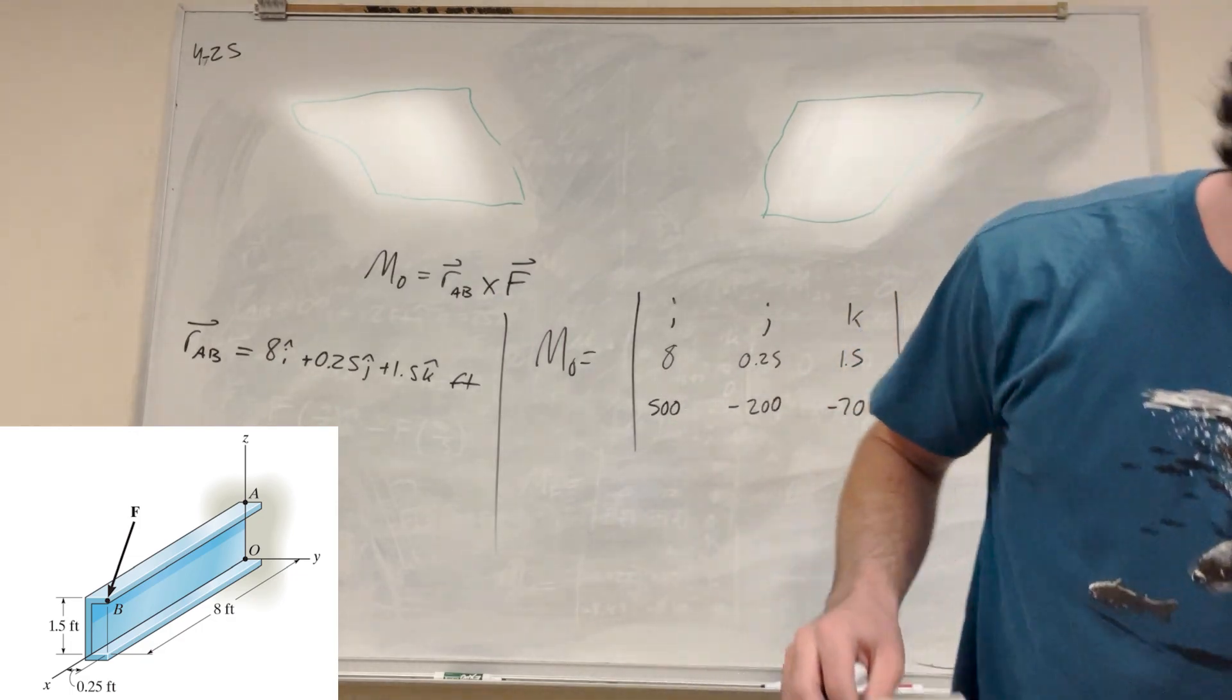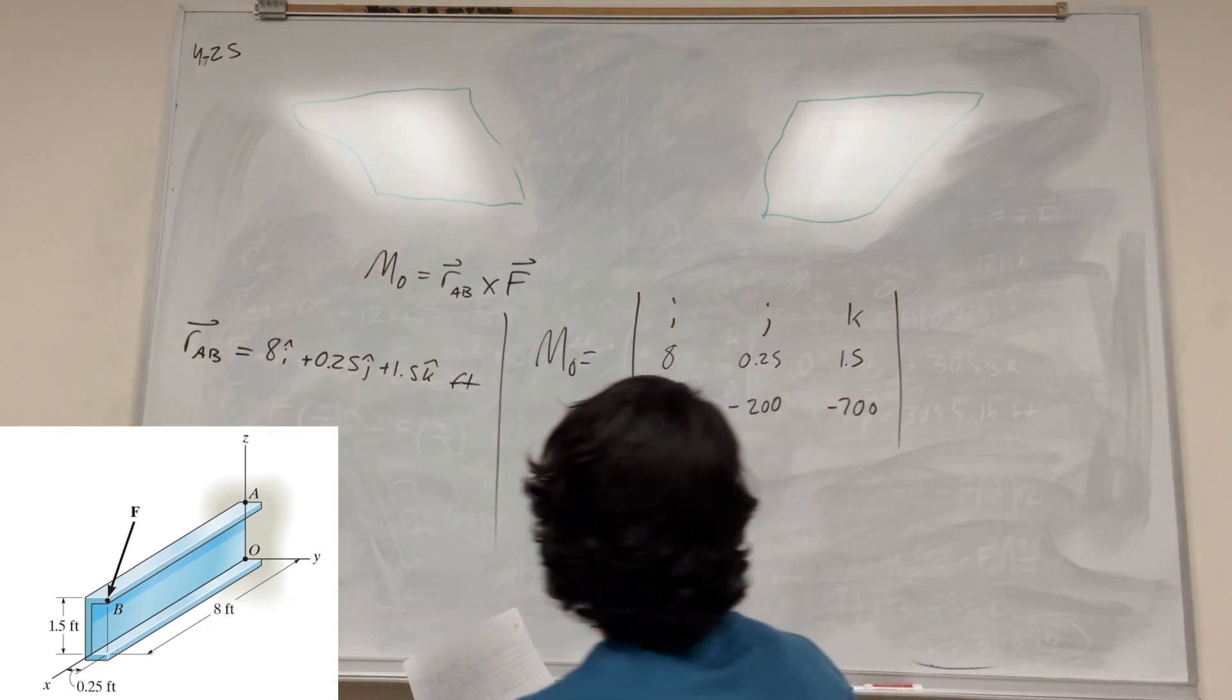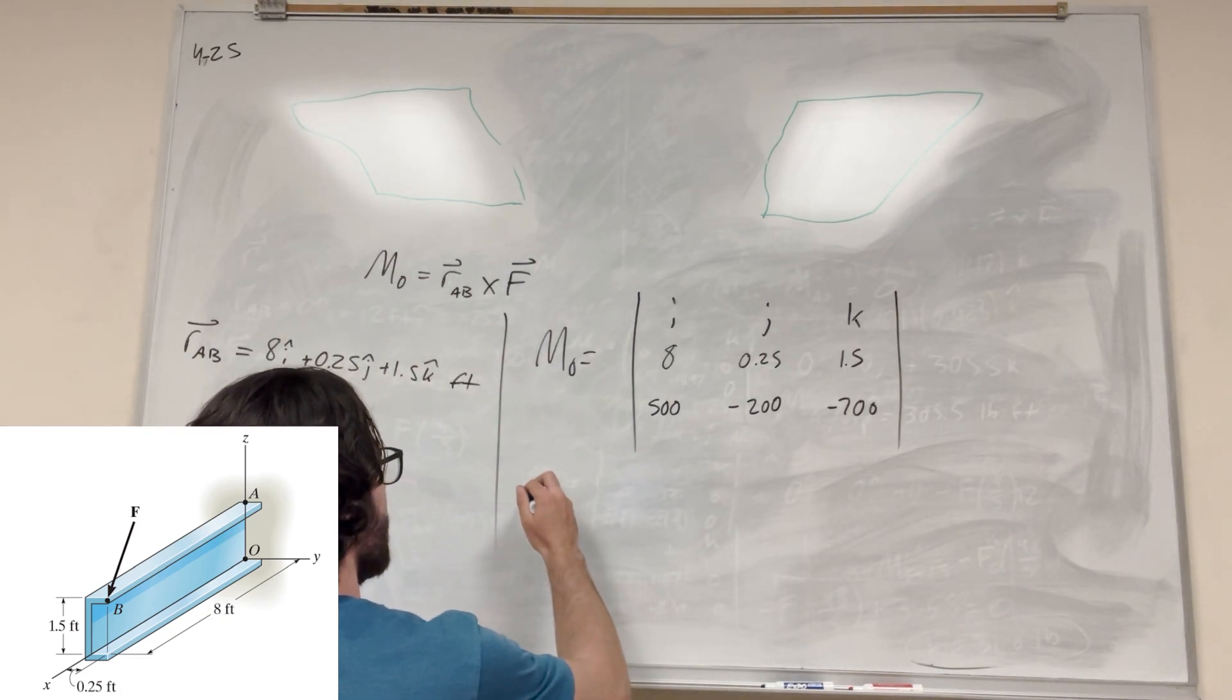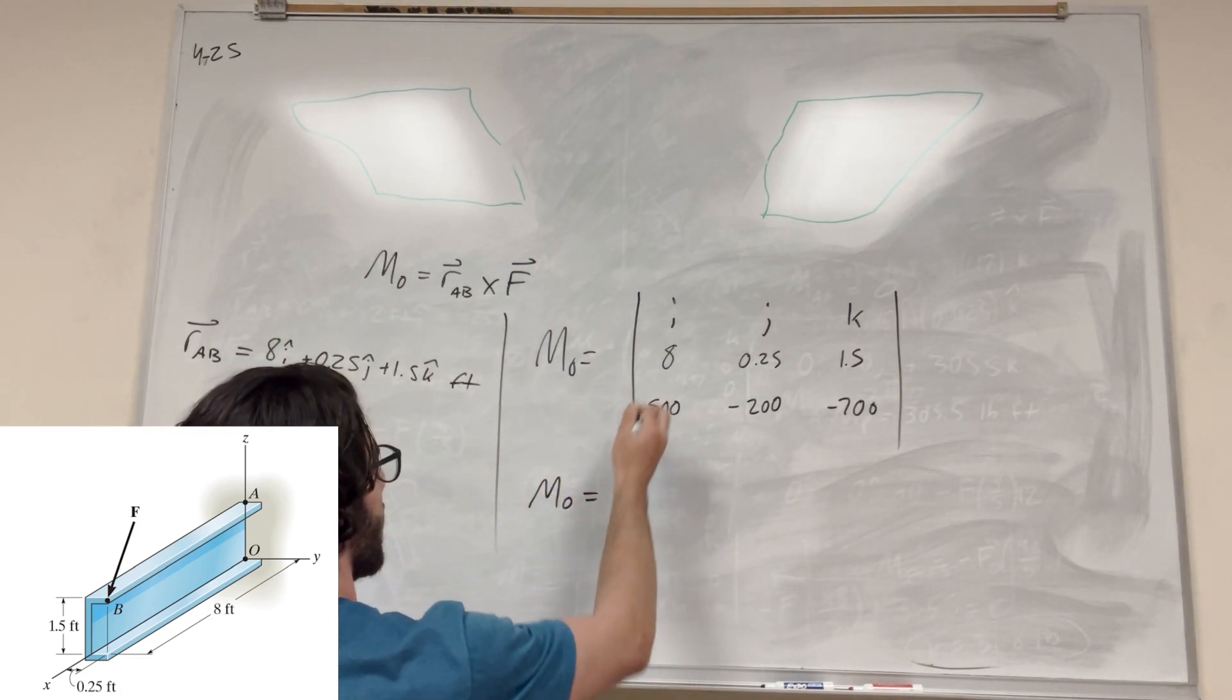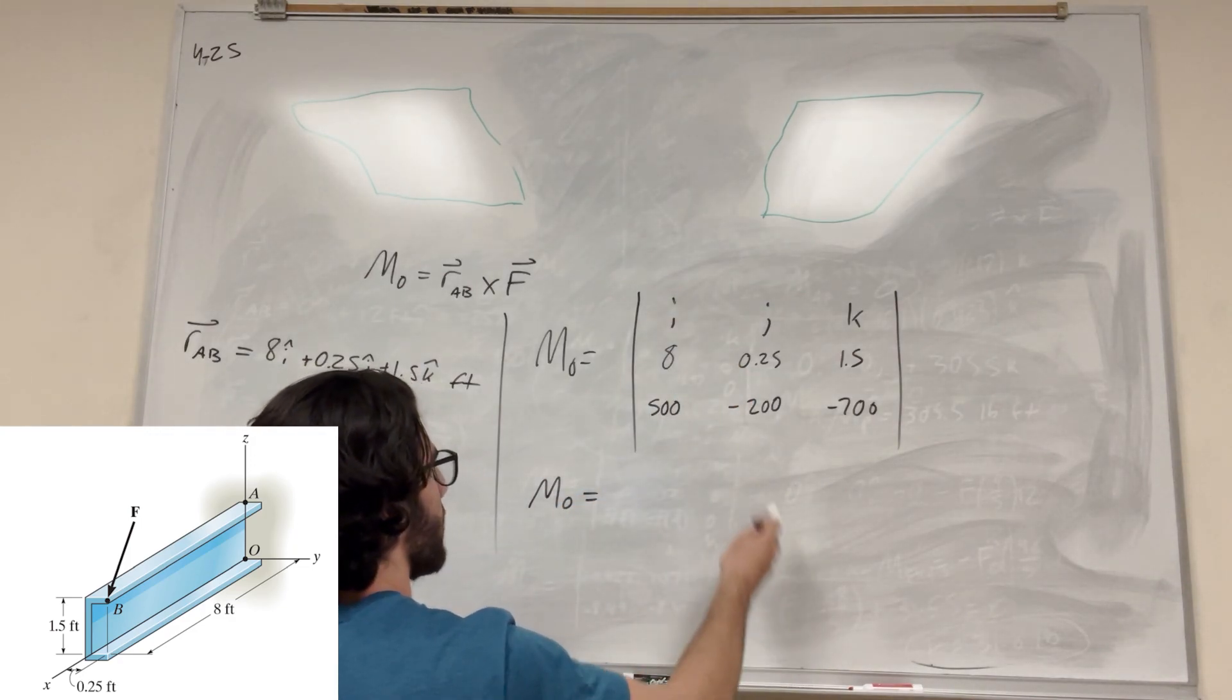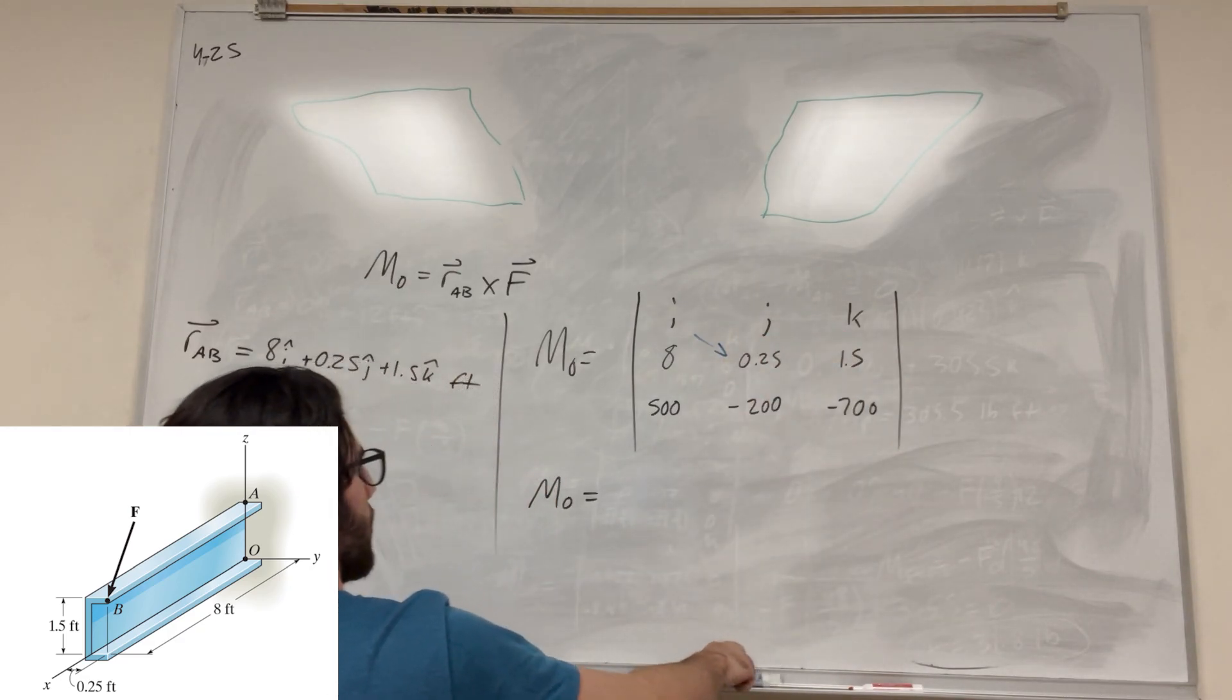So how do we compute cross product? Well, I've taken Calc 3, so I know how to do this stuff, but if you've never done cross product, if you've never taken the determinant before, all you have to do is start with i, and then we're going to go down to these four. So we're working with these four right now.